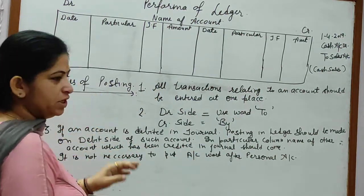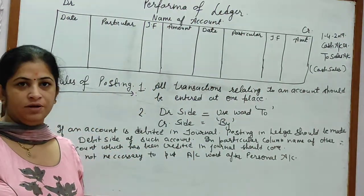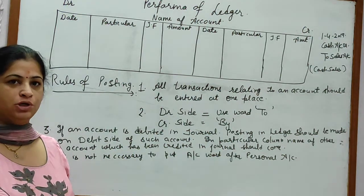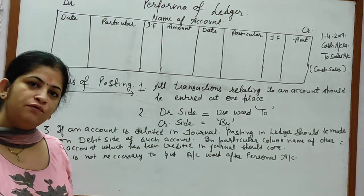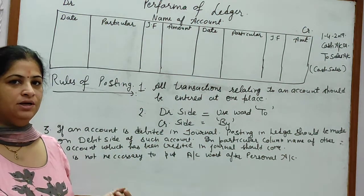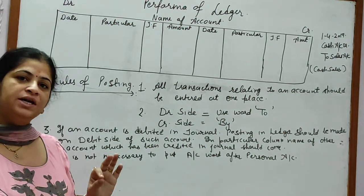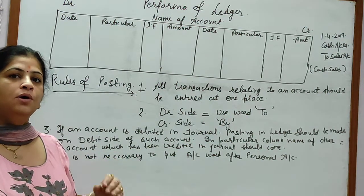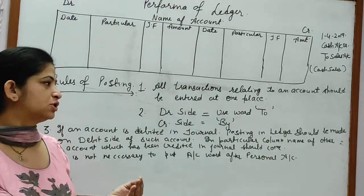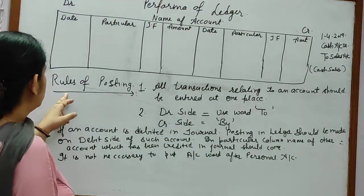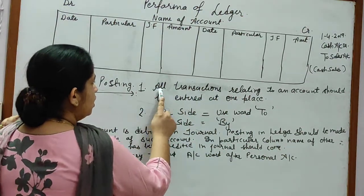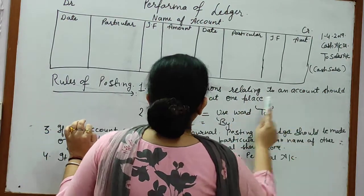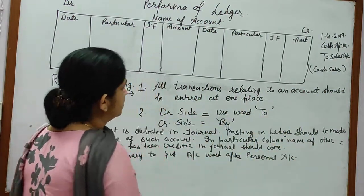Now the rule of posting. In journal you do recording; in ledger you post. Posting is the rule of ledger. Again: in journal you record transactions, and in ledger you post them. Rule of posting: all transactions relating to an account should be entered at one place.